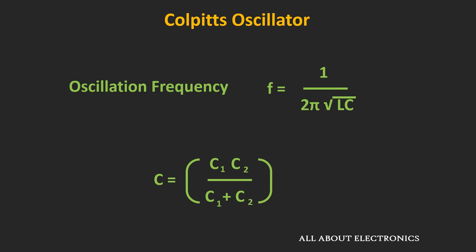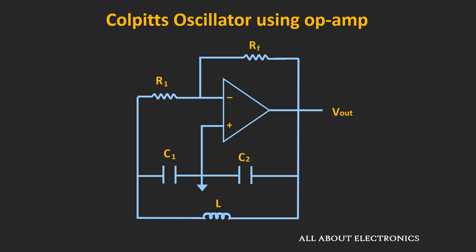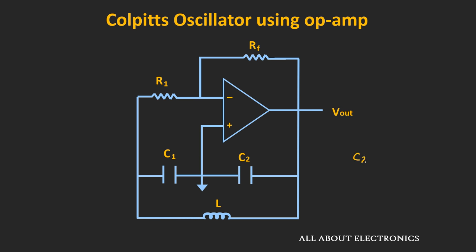The frequency of oscillation F is given by 1 divided by 2π times the square root of LC, where C equals C1·C2 divided by C1 plus C2. This same Colpitts oscillator circuit can also be designed using an op-amp, replacing the transistor, with the op-amp configured in the inverting configuration. The feedback circuit remains the same. The output is measured across capacitor C2, while the feedback is provided via capacitor C1. The ratio C2 divided by C1 is also known as the feedback fraction — the amount of signal fed back to the amplifier.